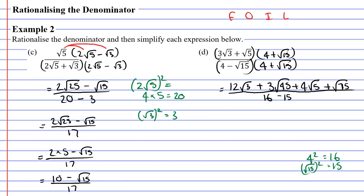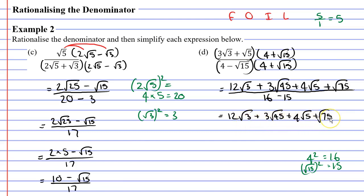What happens when the denominator is 1? A simple example: 5 over 1 is the same as 5. You don't have to write the denominator when it is 1. So we can simplify by just writing the numerator with no denominator. Can we simplify further? We can if we collect like terms. At the moment there are no like terms, but we can make some changes so that we do get like terms.